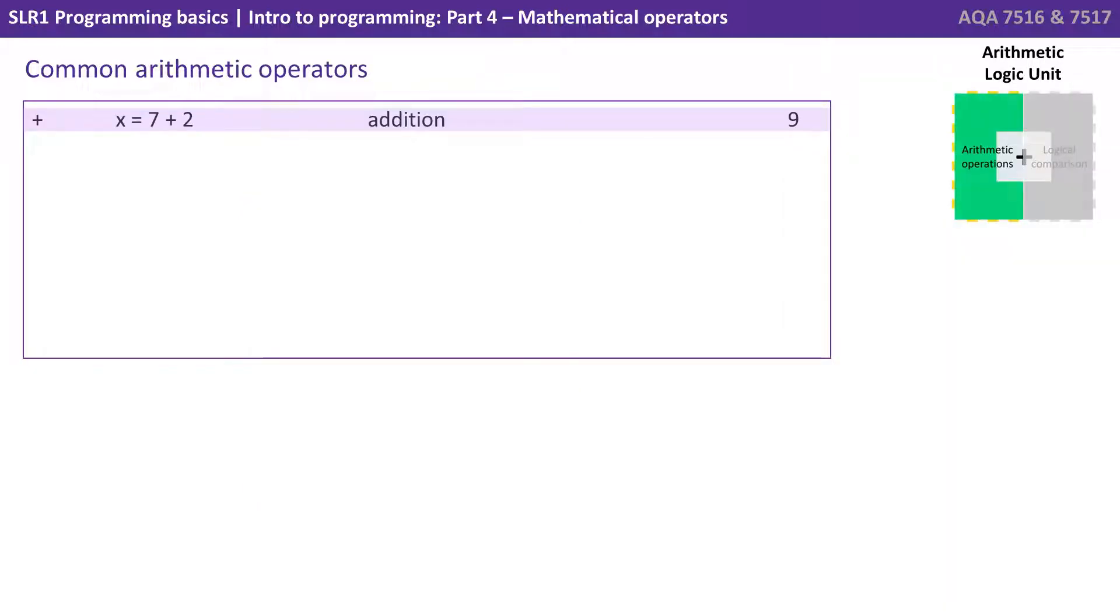So let's look at the arithmetic operation side. The simplest operator is addition or plus, so here x equals 7 plus 2 would be 9. Next we have minus, so x becomes equal to 7 minus 2 will be 5, subtraction.